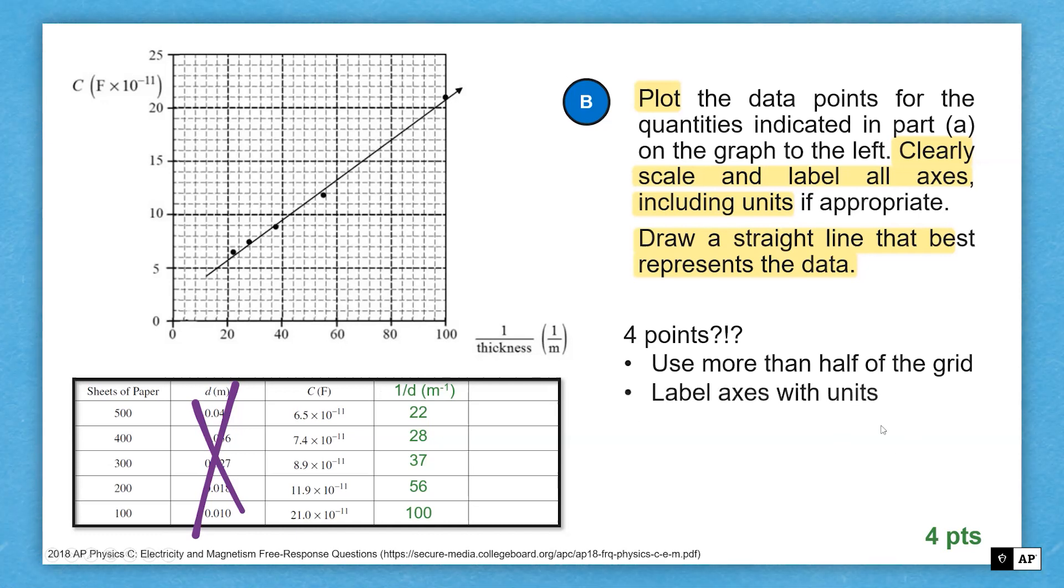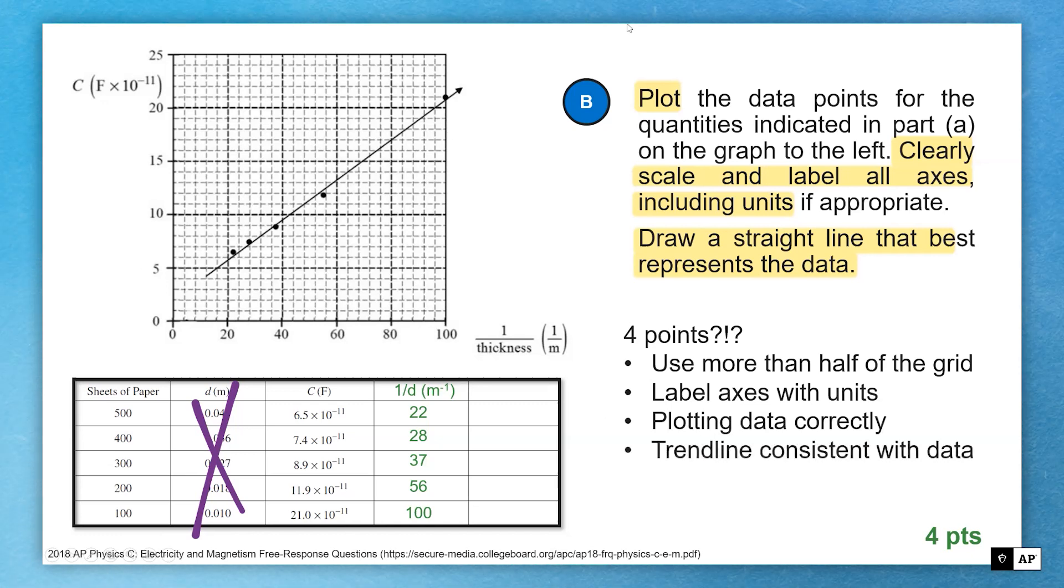The rule is generally more than half of the plot area and more than half of each axis. The next one is for labeling axes with units. If I leave out units, you wouldn't get this point. It told you to do it, so include the units. Plotting data, that's just putting the points there. And then ultimately drawing a trend line. This is all worth four points.